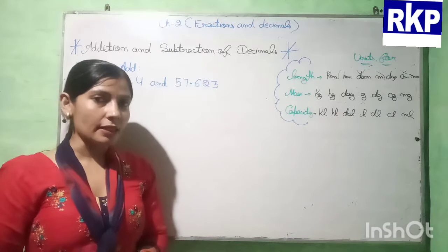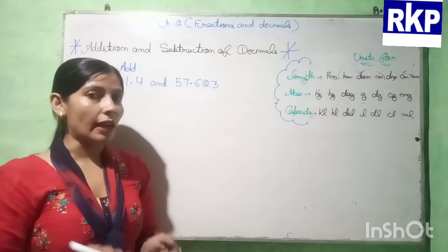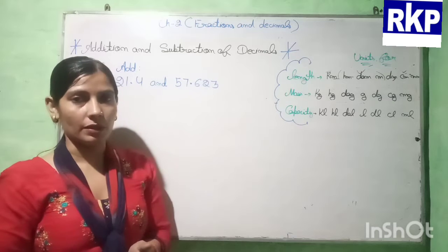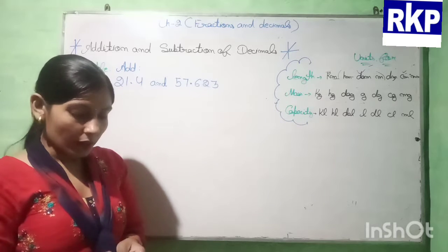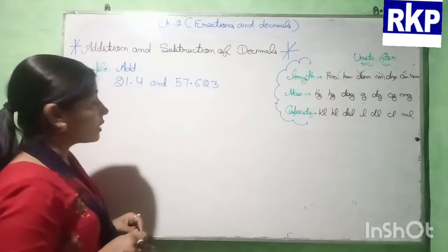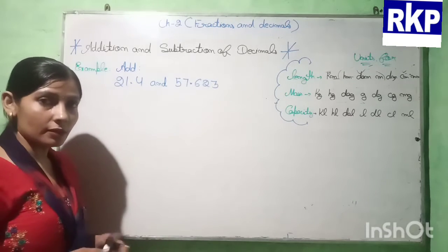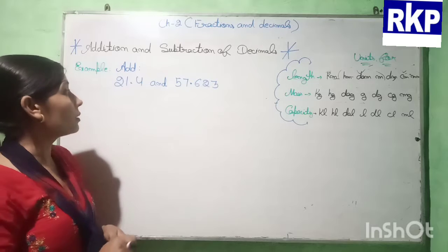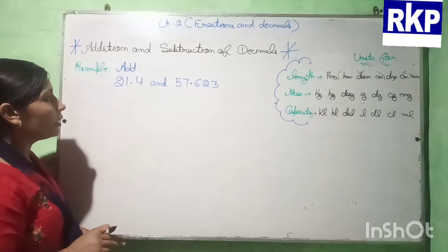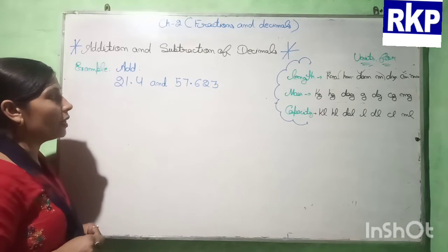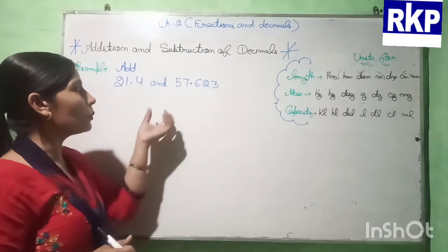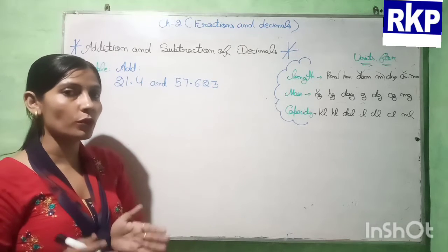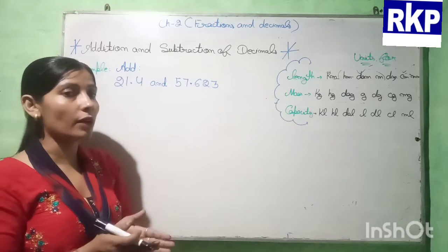Now students, let us see how we can add and subtract decimals. Let us take one example to understand this topic. Here we have to add 21.4 and 57.623.